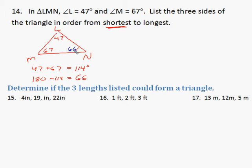And so we found that this is 66. Now we want to answer the question: list the three sides of the triangle in order from shortest to longest. The shortest side is going to be across from the smallest angle, so MN is the shortest side. Then next, 66 is the next largest angle, so it's going to have the next largest side, which is ML. And last, our largest angle is across from the longest side, which is LN.